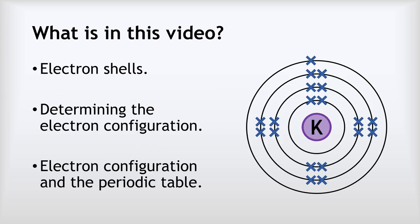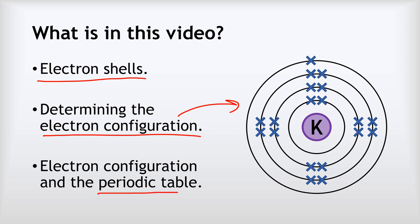So what are we going to look at in this video? Well, three things. Firstly, the idea of electron shells — we met those briefly when we looked at the Bohr model, but we'll look at them in more detail today. We're going to understand how to determine something called the electron configuration. And then finally, we'll look at the relationship between electron configuration and an atom's position on the periodic table.